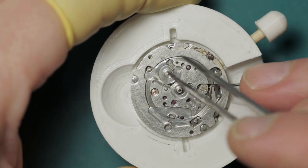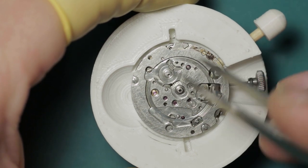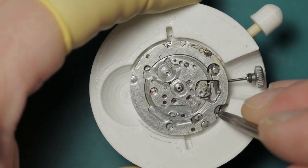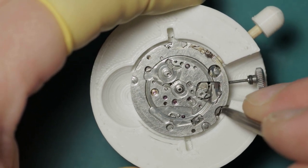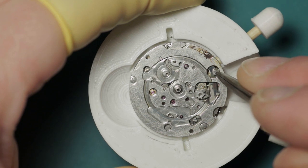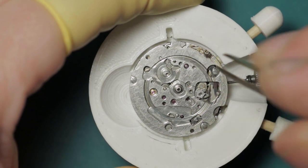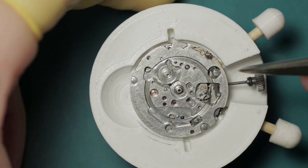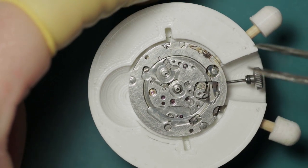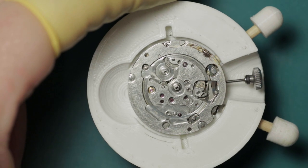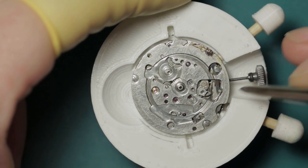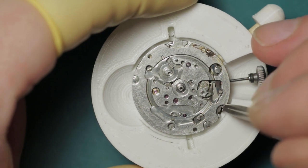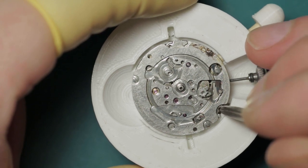You might remember if you saw the 6138 UFO video, that particular watch had a problem with the hour recording wheel. I didn't strip and service that watch because it was in really good condition with the sole exception of this hour recording wheel fault. The problem with that one was this little lever here which bears against the hammer. However, I expected this to be broken on this one as well, but that's not the case.